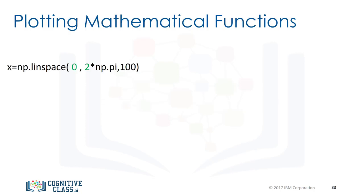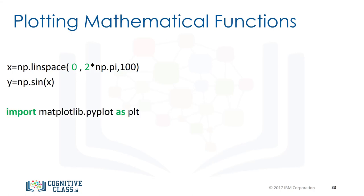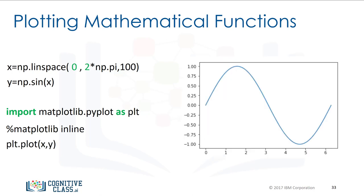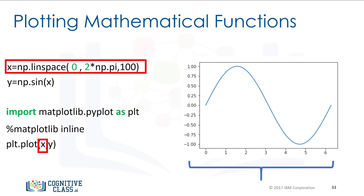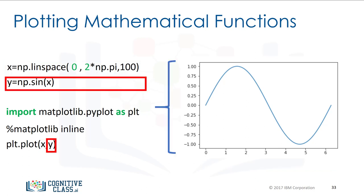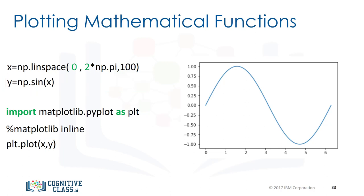We can use linspace to generate 100 evenly spaced samples from the interval 0 to 2π, then use the NumPy sine function to map the array x to a new array y. We can import the library matplotlib.pyplot as plt to help us plot the function. In a Jupyter notebook, we use the command matplotlib inline to display the plot. The plot command takes the x-axis values as the first input and the y-axis values as the second. There is a lot more you can do with NumPy — check out the labs at numpy.org for more. Thanks for watching.